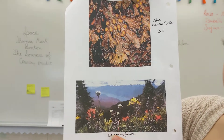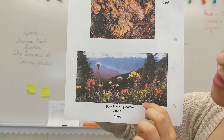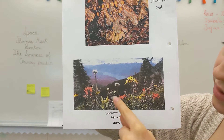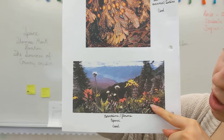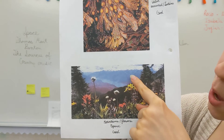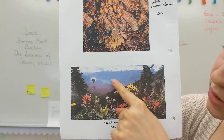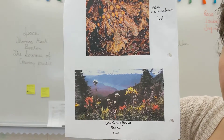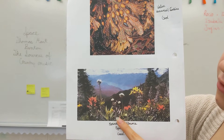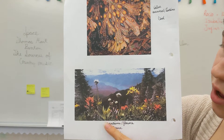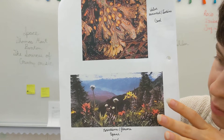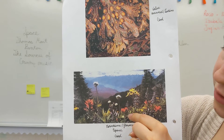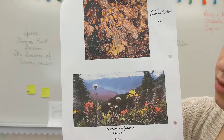And then we have space. We are dealing with distance. We have the flowers, which are very up close, and you can tell we're super close to the flower. But then you see the mountains, and because they're put higher on the page, they look very far away. And the flowers, because they're at the very bottom, look super close up to us. That's dealing with space. God created different things in different areas to make some things look bigger and some things look smaller.